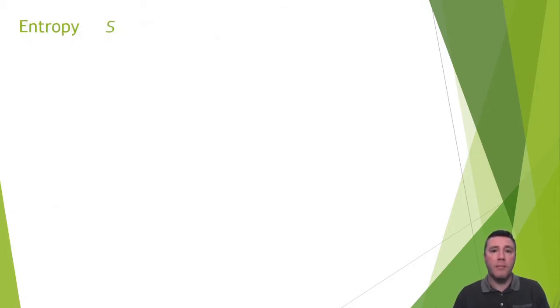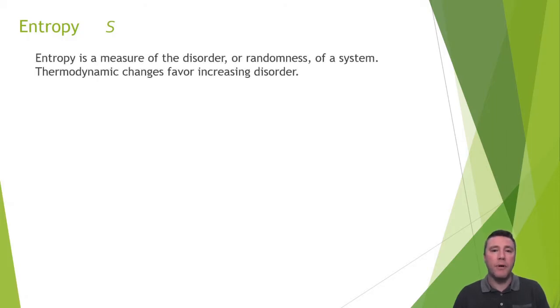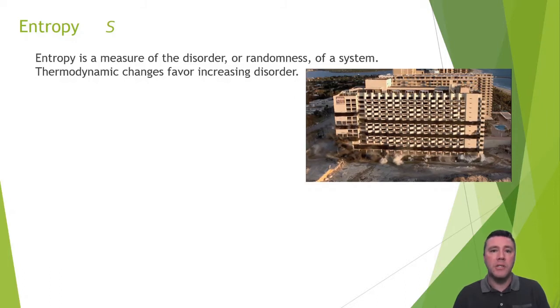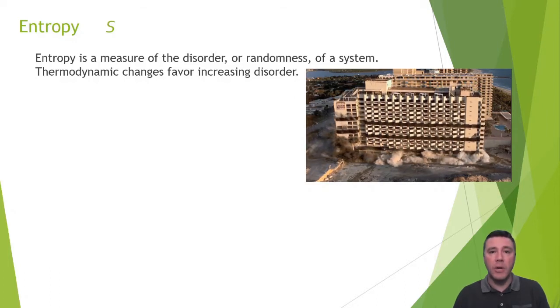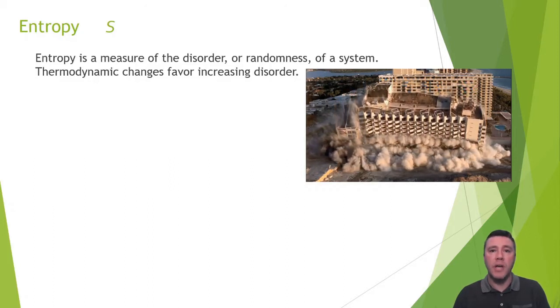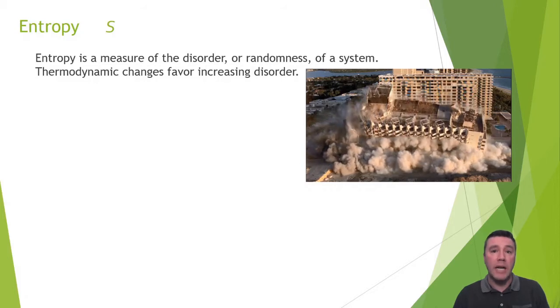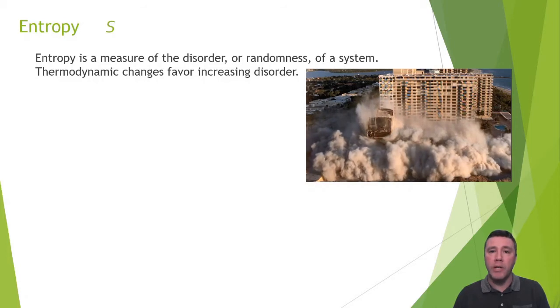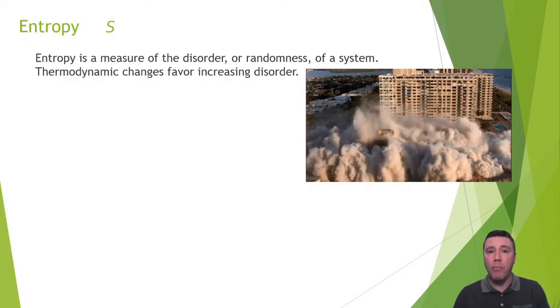Entropy, identified by the capital italicized S, is a measure of how disorderly or random a system is. In this example of a system, a building, as it's being demolished and collapses, disorder is increasing literally right before your eyes. Since the description of a system's entropy is comparative for relating one thing to another, we would describe the building as having a lower entropy than the pile of rubble, which is clearly a higher entropy state.